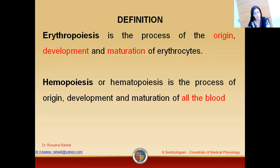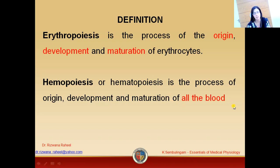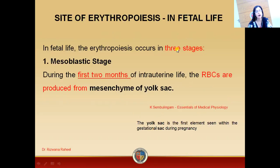Now what is hemopoiesis? Hemopoiesis is a general term, also known as hematopoiesis. This is the process of origin, development and maturation of all the blood cells — formation and development of the different types of blood cells. While erythropoiesis is just associated with the formation of RBCs.